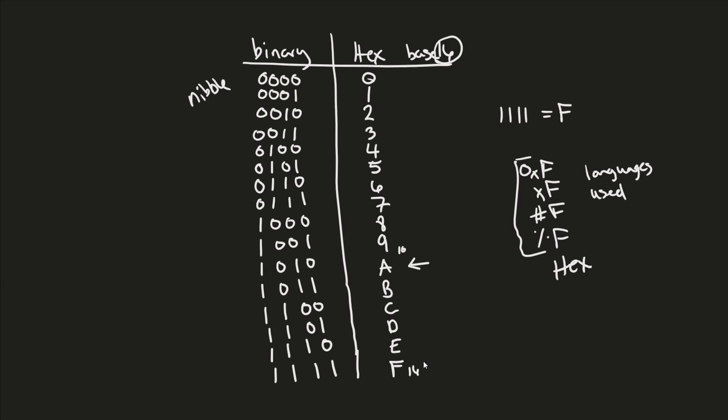So if 1111 equals F, what if we did something like FA? Looking at our chart, A is 1010 and F is 1111. So FA in binary is 1111 1010. Look at what we just did — we created a whole byte using just two letters in hexadecimal form. That's the power of hexadecimal: it represents binary very easily using a compact version of a numeric system.